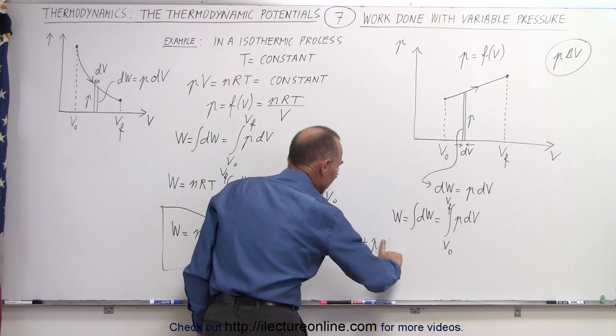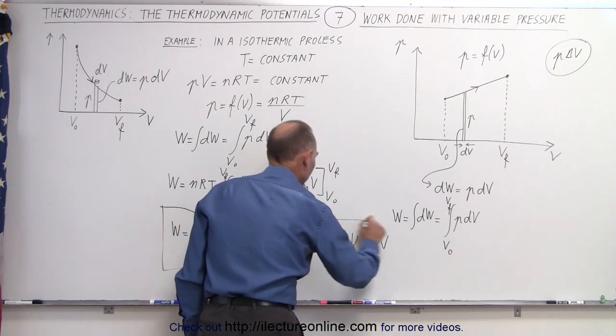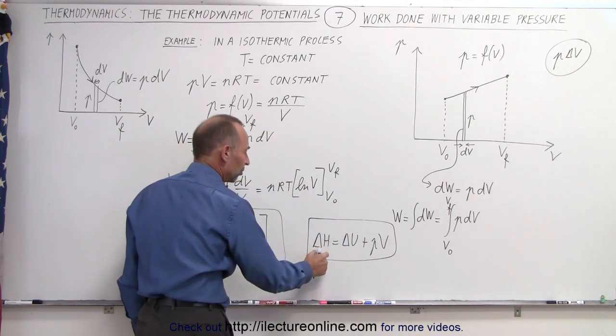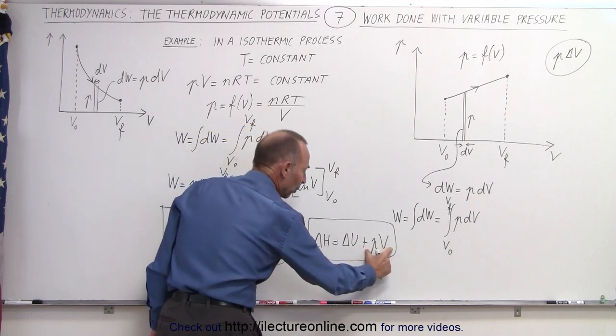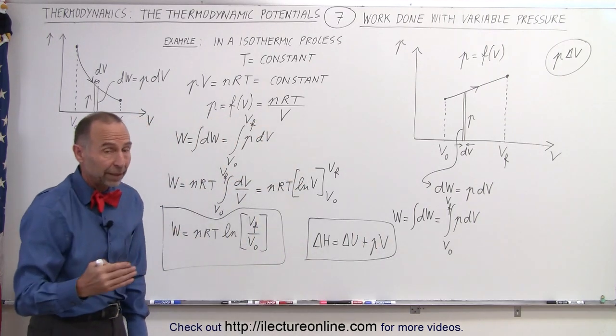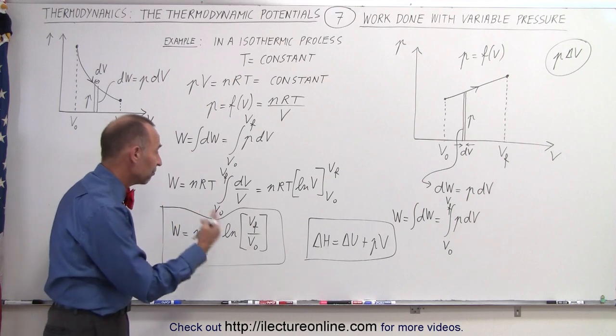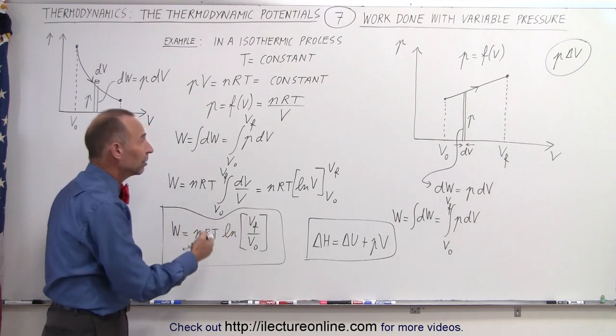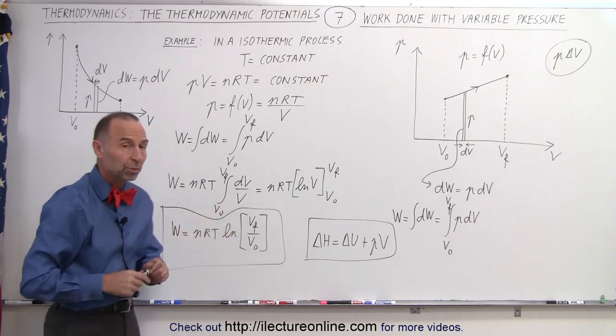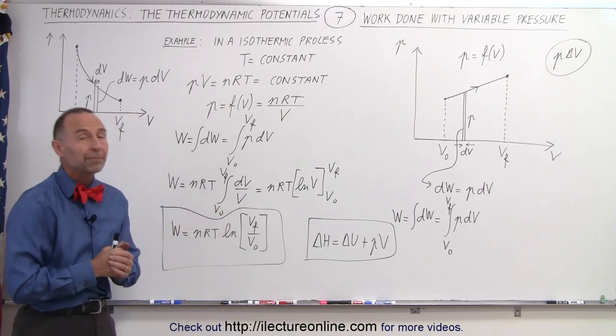And that would be P times V, not W, P times V. So realizing that there's a relationship between enthalpy and the work done by the system, the work done by the system may not be a constant value. It may have to be calculated depending upon the relationship between pressure and volume. But it can be done as well.